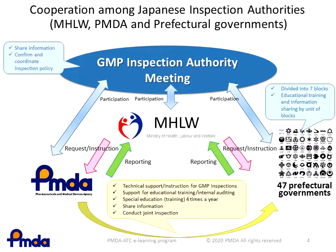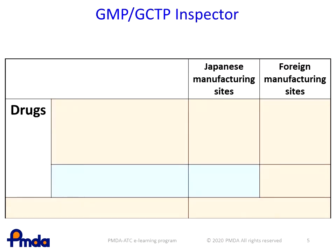PMDA supports and instructs the 47 prefectural governments by providing technical support for educational training, internal audit, conducting special education, sharing information, and conducting joint inspections. PMDA and the 47 prefectural governments share their responsibilities for GMP inspections based on the properties of the products.